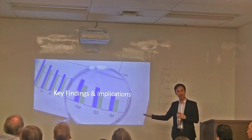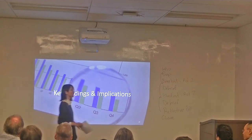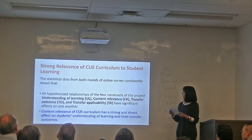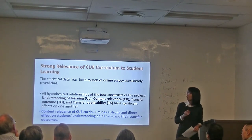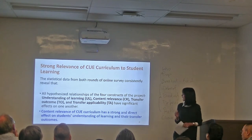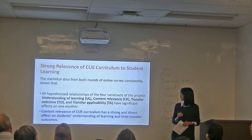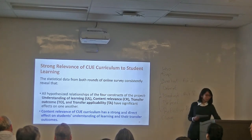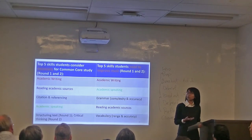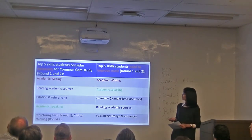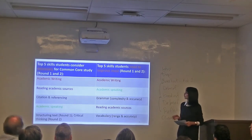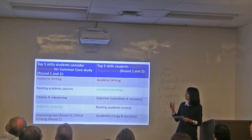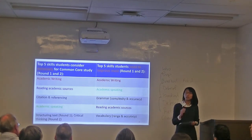Passing to Park Ho for findings and implications. Statistical data from both rounds of e-survey consistently show that all hypothesised relationships among the four constructs have significant effects on one another. In particular, content relevance of the CUE curriculum has a strong and direct effect on students' understanding of learning and their transfer outcomes. In the survey, students were asked to rank the top five skills necessary for Common Core study and the five skills they need to improve most. Results were consistent across both rounds.